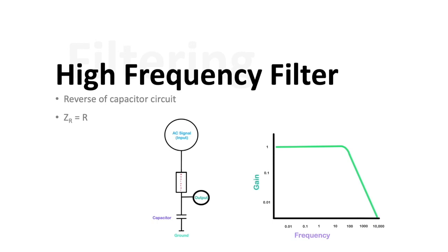This can be graphically represented again in a logarithmic fashion here where you see that there becomes a point where the higher the frequency is, the less gain or the less of the signal is getting through and it drops off quite precipitously.